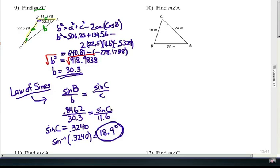Now that's a lot of work, a lot of calculations. But remember, we did the law of cosines to find the missing third side, and then we used that for the law of sines to find the missing angle, 18.9 degrees.